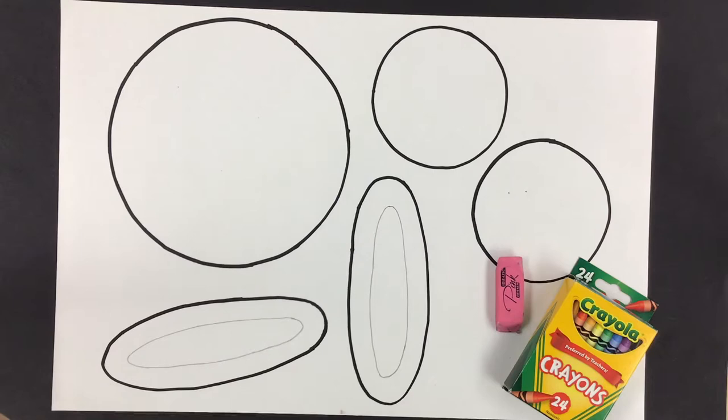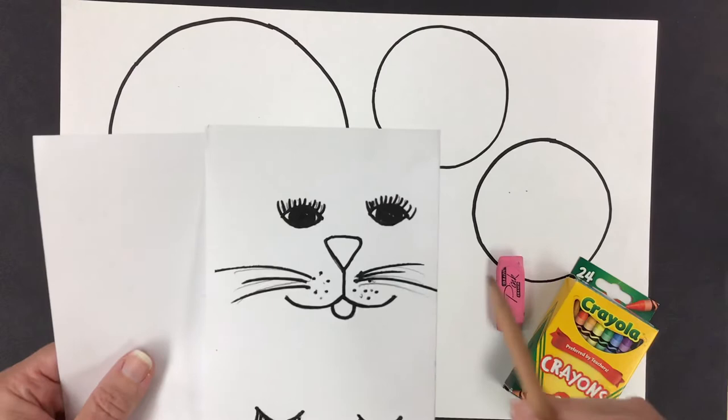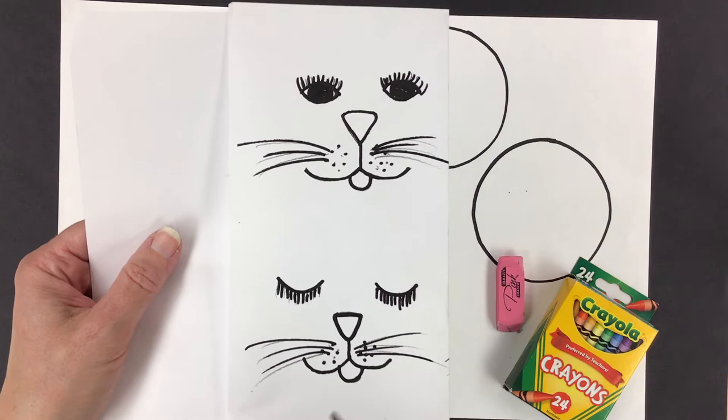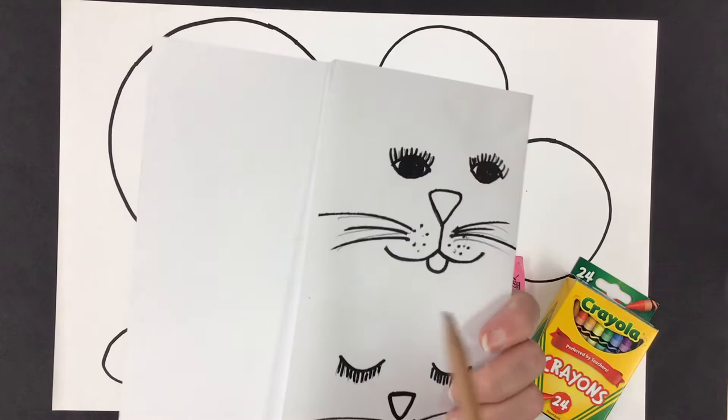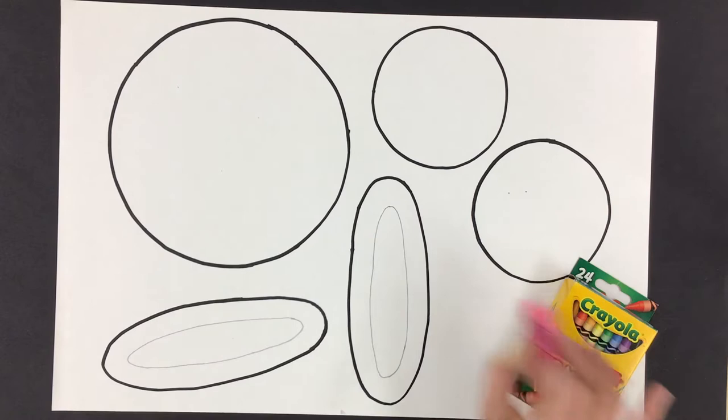One option for making our Arctic Hare's face is to keep the eyes open. And another is to have them closed. I will show you how to do that. I'll also show you how to make teeth or a tongue. Let's get started.